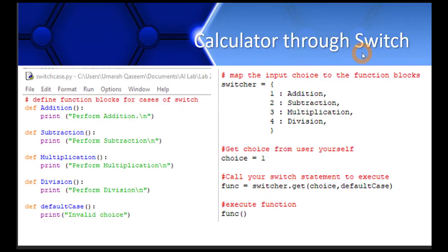Let's understand how to use a dictionary to make a switch control structure through an example. I have made a dictionary with the name switcher and written four keys with four values. So one is corresponding to addition, two for subtraction, three for multiplication, and four for division.